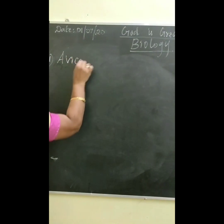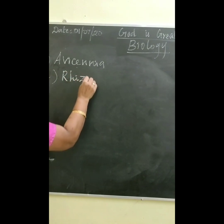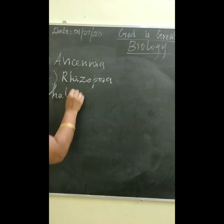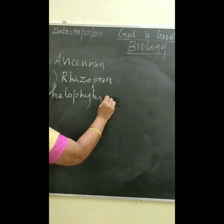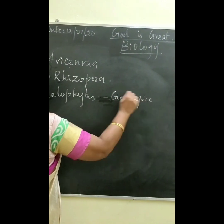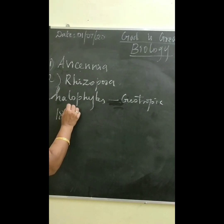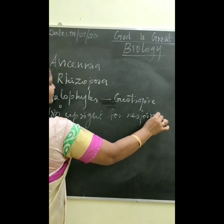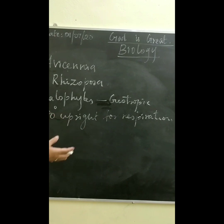The first example is Avicennia. The second example is Rhizophora. Rhizophora is a halophyte — halophyte means a salt-tolerant plant. This plant produces negatively geotrophic roots, which turn 180 degrees upright for respiration. These plants grow in places where oxygen is deficient.